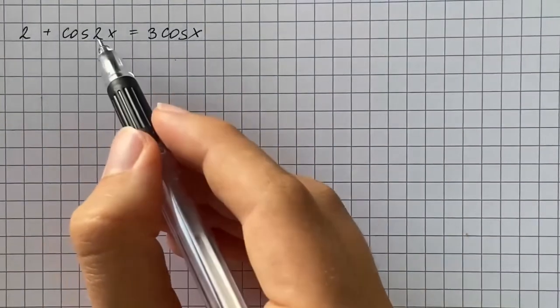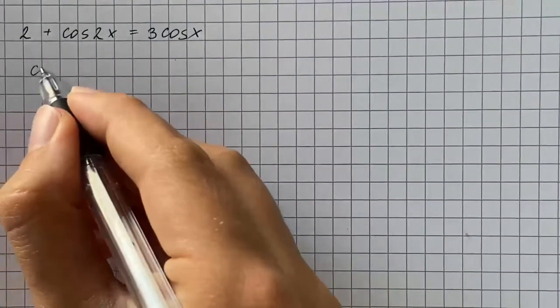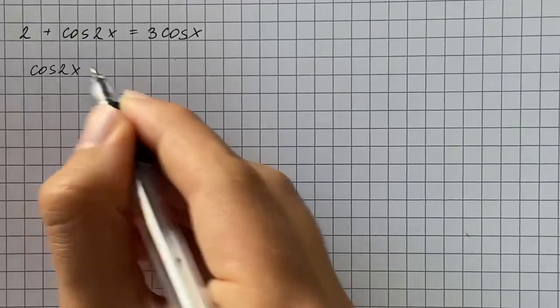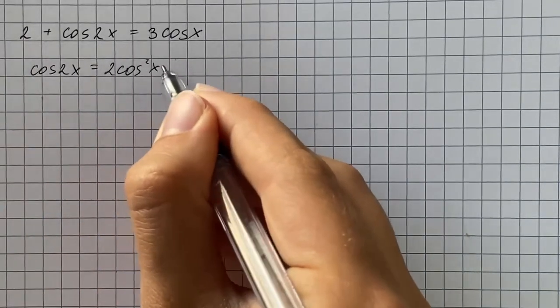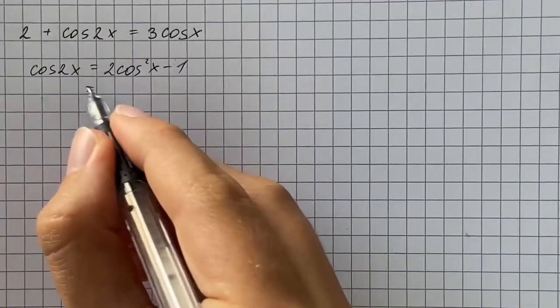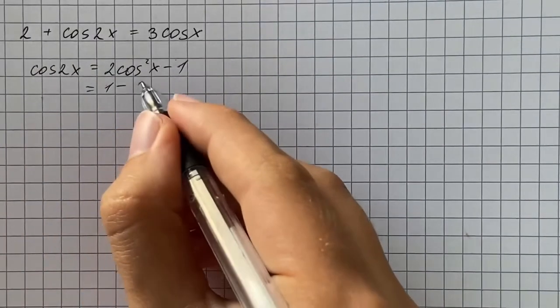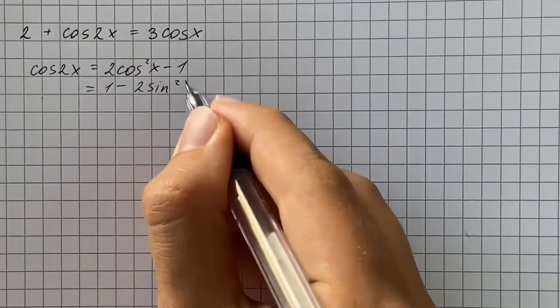There are two identities for cosine of 2x that you should know. The first one is that cosine of 2x equals 2 cosine squared of x minus 1, and the second one is that cosine of 2x equals 1 minus 2 times sine squared of x.